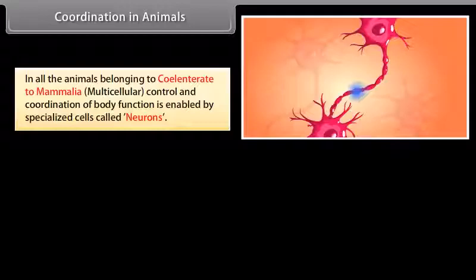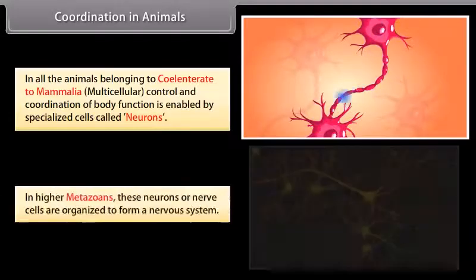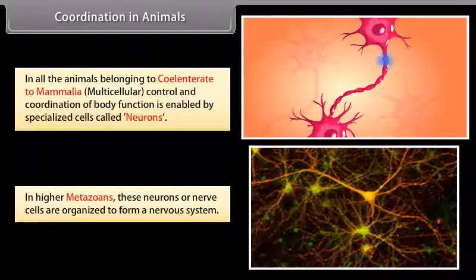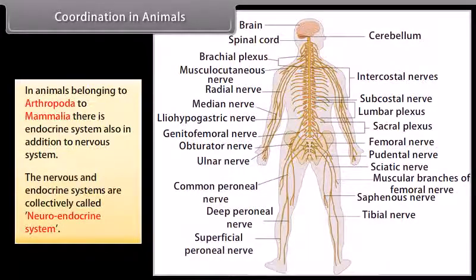In all the animals belonging to coelentrata to mammalia, multicellular control and coordination of body function is enabled by specialized cells called neurons. In higher metazoans, these neurons or nerve cells are organized to form a nervous system. In animals belonging to arthropoda to mammalia, there is an endocrine system also in addition to the nervous system. The nervous and endocrine systems are collectively called the neuroendocrine system.